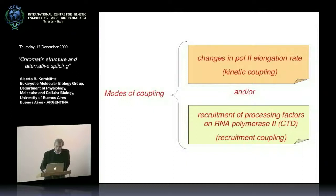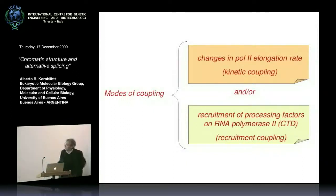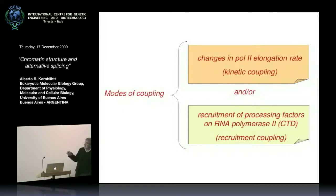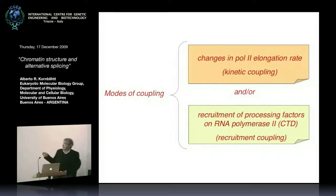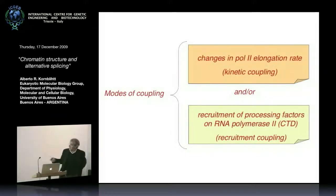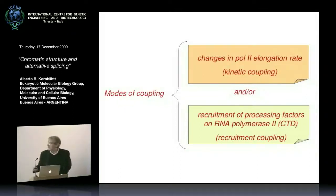So the modes of coupling we envisioned at that time were two different kinds of mechanisms. One is that the promoter coupling affected the rate of Pol2 elongation — what we call kinetic coupling. The other is that it affected the recruitment of processing factors on RNA polymerase II, in particular on the carboxyterminal domain — what we call recruitment coupling.